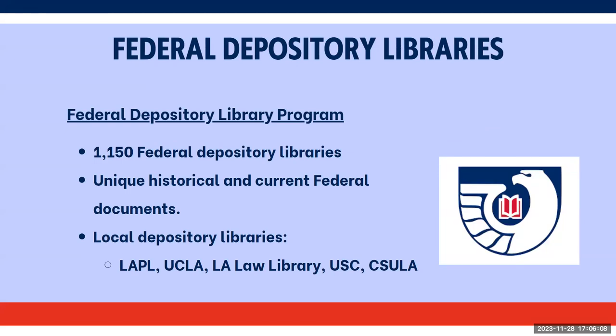Another program is the Federal Depository Library Program. They are administered by the U.S. Government Publishing Office and were established in Congress in 1813 to ensure that the American public had access to government information and depository libraries throughout the U.S. and its territories. They contain unique historical and current federal documents, and you can find them using their catalog or by visiting one of the libraries and asking a librarian for assistance.